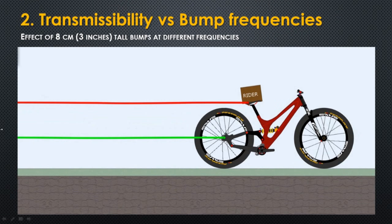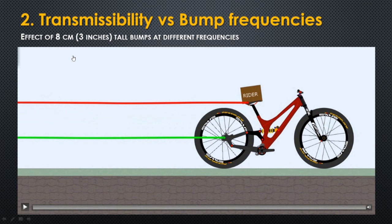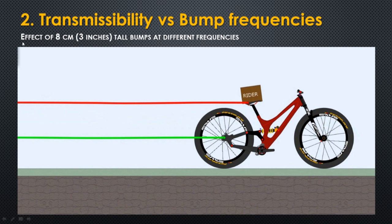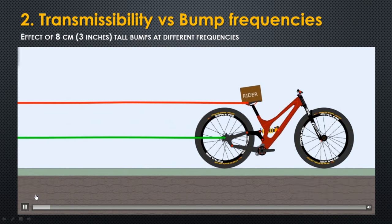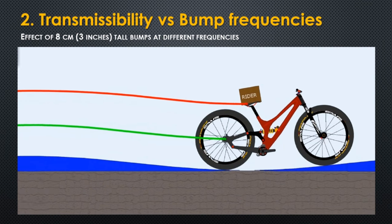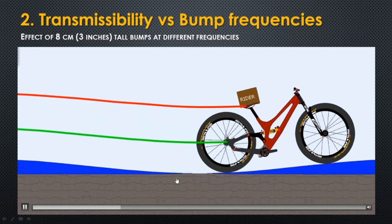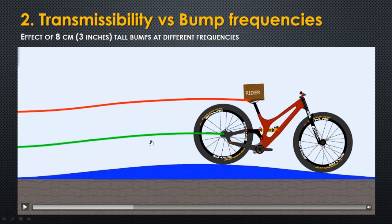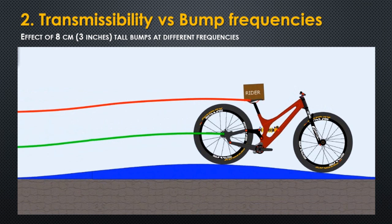Now in this simulation we are going to see how the type of bumps — the frequency of the bumps — will affect the transmissibility. We've got the bike passing over several bumps, all of them the same height: three inches tall. The first type of bumps are very low frequency bumps — very large and smooth. As expected, the suspension does not absorb this type of very smooth bumps. The red line is almost parallel to the ground, to the blue line representing the bump. So the transmissibility in this case is 1 — the suspension does not contribute anything.